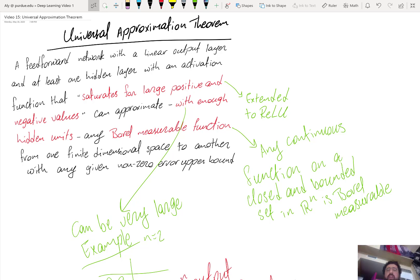And that function is from one finite dimensional space, the domain of the function to another, which is the range of the function. So these are things that are very typical to find in practice. Then I can find you a neural network and that neural network has a linear output layer used for regression.